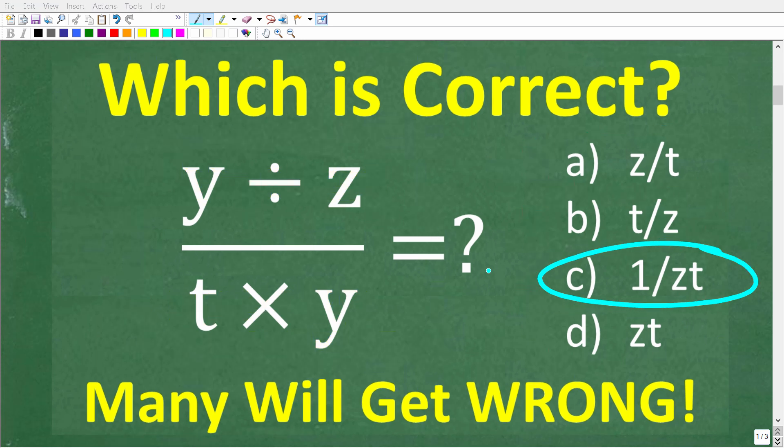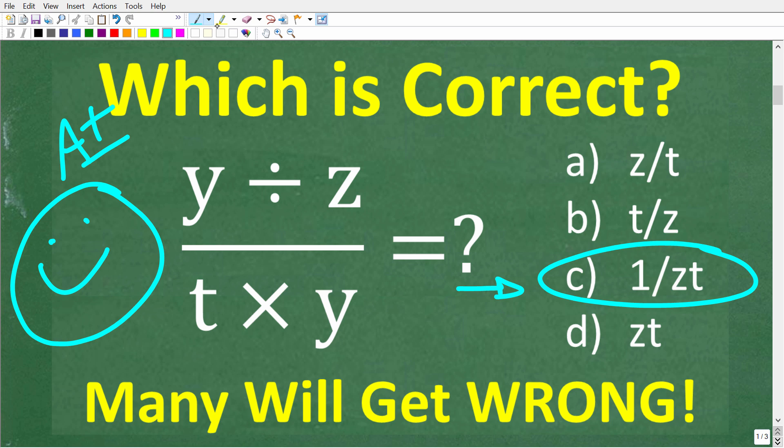So the correct answer here is c, which is 1 over zt. Now, if you got this right, I definitely have to give you a nice little happy face and an A plus. Very good.